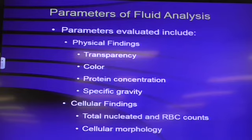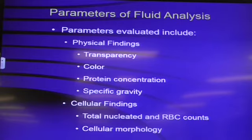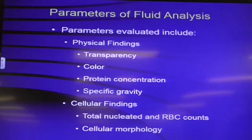If it's real yellow, it could be bilirubin, this type of thing. So you look at the color. Then you're going to use the refractometer and do a protein concentration. If it's less than one gram per deciliter, that's usually consistent with a pure transudate. When you start to get above that, you're going into what we call the modified transudate, and if it keeps going, you're going to get into an exudate.